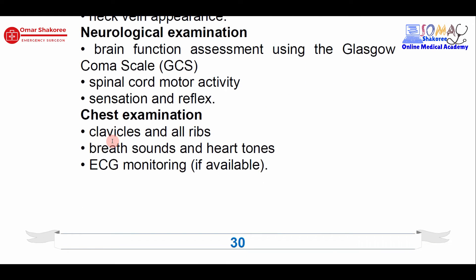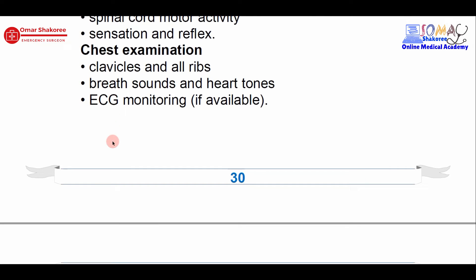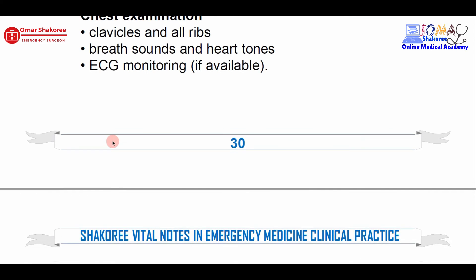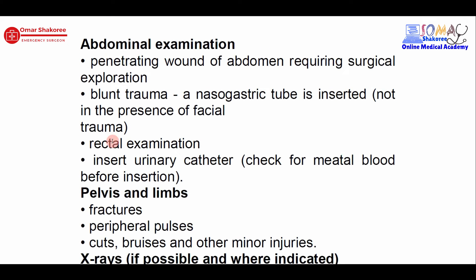Then come to the chest — auscultate the chest, look at the clavicle, breath sounds, heart sounds, and you may need an ECG, especially in older patients with trauma. Then come to the abdominal examination in the secondary survey. If you have a penetrating trauma, remember — penetrating trauma to the abdomen equals surgical explorative laparotomy. I will give you a link below for a video specifically about abdominal trauma patients.